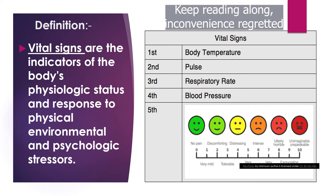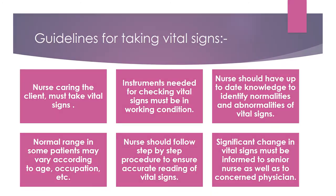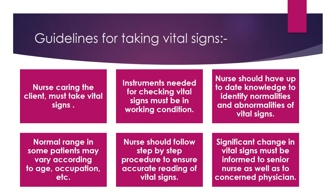We will also see the vital signs pain scale. Vital signs include a person's body temperature, pulse, respiration, and blood pressure. We call this the short form TPR and blood pressure.